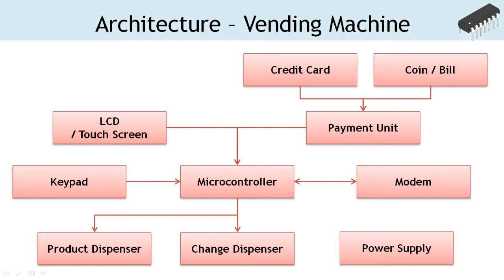Through a keypad, LCD, or touch screen, the machine receives input from the user to gather the details of the product to be dispensed. Once the payment is validated and the required input is gathered, the machine uses a mechanical system to dispense the selected product. On completion of the transaction, either the credit card is returned or change may be dispensed. The modem module is used to connect the vending machine to the internet. The owner may keep track of inventory in the machine, check daily sales and collection, and even monitor the machine for security purposes remotely if it is web enabled.